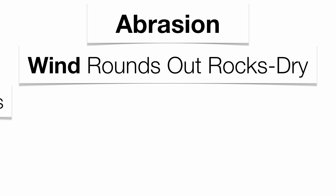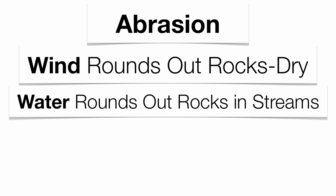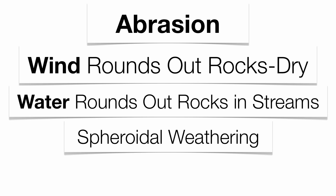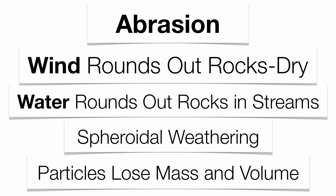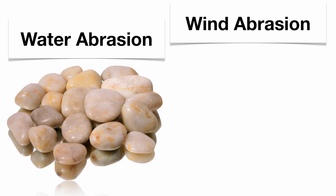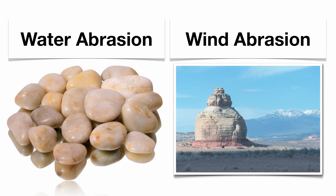The next type is abrasion, which occurs with wind and water. It's a general term for the rounding out of rock. Wind causes abrasion in very dry climates by picking up sand fragments and sandblasting the rock, smoothing it out. Water has a natural tendency to smooth things out as it flows over rock. This leads to spheroidal weathering, where particles lose mass and volume as their sharp angles break apart. Here you can see examples of water abrasion and wind abrasion — the smoothing or rounding out of rock fragments.